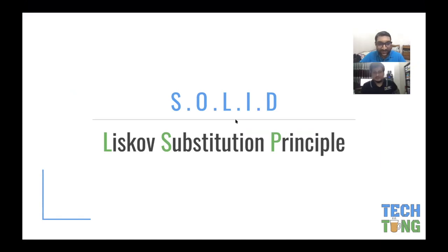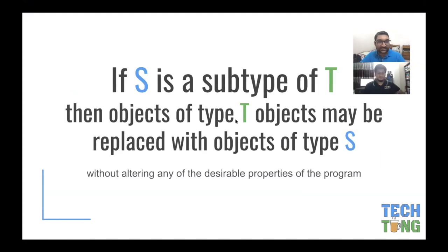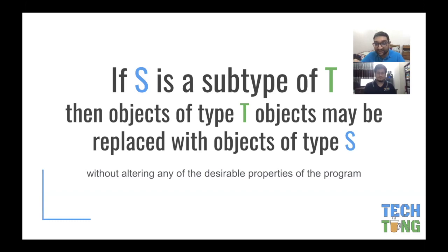The Liskov Substitution Principle textbook definition is: if S is a subtype of T, then objects of type T may be replaced with objects of type S, without altering any of the desirable properties of the program.